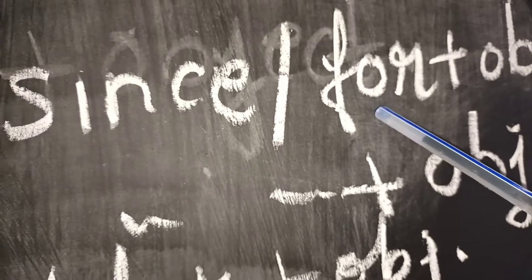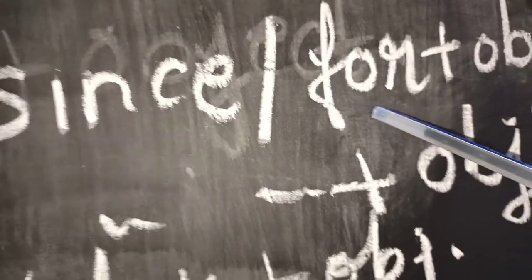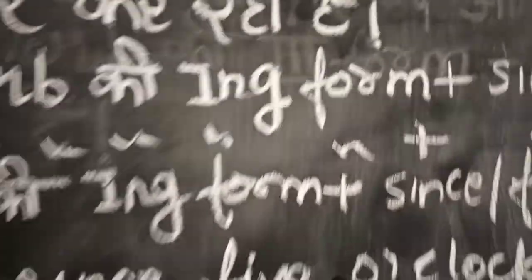Otherwise, if it refers to a period of time, then you will add for. Then object. So this will be the form of Present Perfect Continuous Tense.